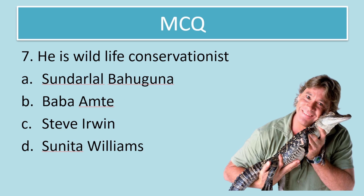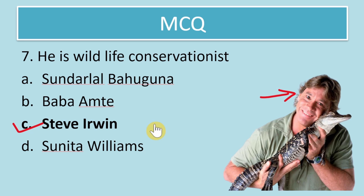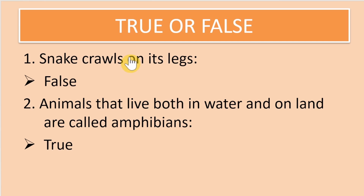Next MCQ: who is a wildlife conservationist — Sundar Lal Bahuguna, Baba Amte, Steve Irwin, or Sunita Williams? The correct answer is Steve Irwin. This person is Steve Irwin, and he was a wildlife conservationist.